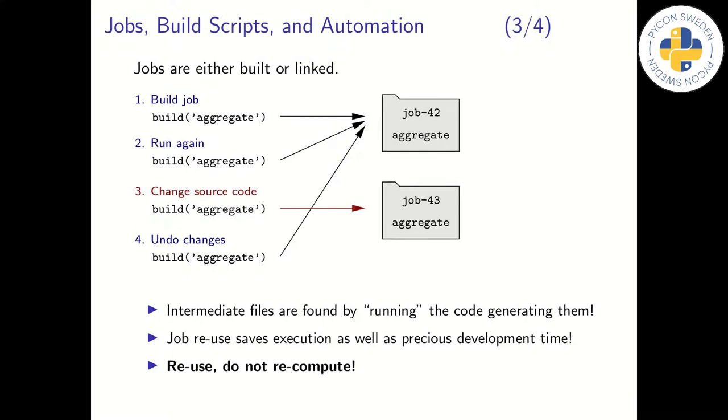In point two, we run the same program again. The accelerator responds by immediately returning a link to the already existing job directory. This is super fast, since no computations needs to be done. In point three, we modify the program a bit and run it again.